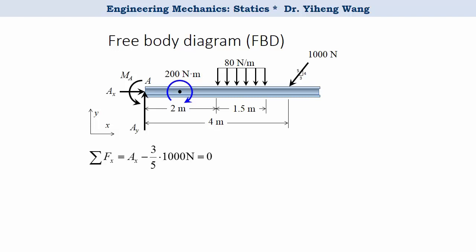The first equation is the resultant force along the x direction, which equals our unknown force Ax minus the x component of the 1000 N force, and it equals zero. Note that you must write the equation according to the coordinate system you set up. In this case, right is the positive x direction following conventions, therefore force Ax is positive and the three-fifths times 1000 N is negative.